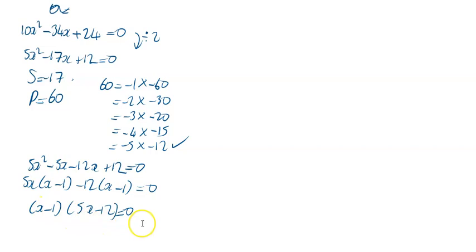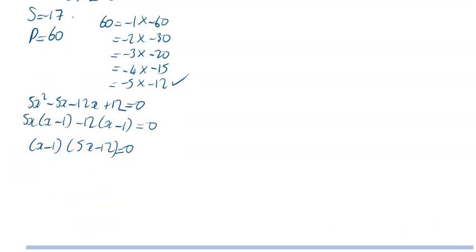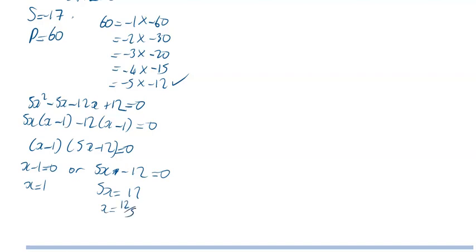You're in that lovely situation where a times b equals zero, so either a equals zero — meaning x minus 1 equals zero, which means x equals 1 — or 5x minus 12 equals zero, which means 5x equals 12, so x equals 12 divided by 5, which is 2.4. So your two answers are x equals 1 and x equals 2.4.